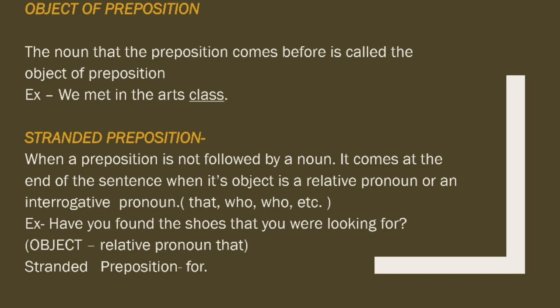Let's talk about object of preposition. The noun that the preposition comes before is called the object of preposition. In 'we met in the arts class', 'in' is the preposition and 'class' is the noun before which the preposition comes — with determiner and adjectives in between — so 'class' is the object of preposition.